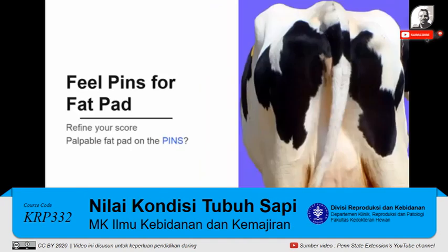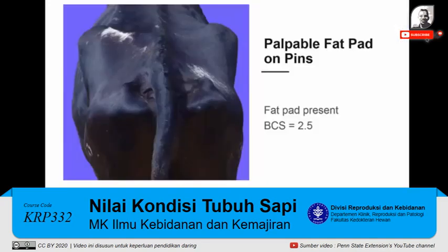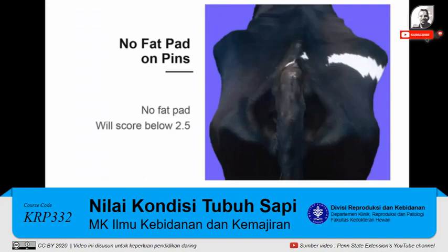Now let's refine that score of less than 2.75 by evaluating the pins more closely. Can you feel a fat pad on the point of the pins? If you can feel a fat pad on the point of the pins, the cow will score 2.5. If you cannot feel a fat pad, the cow will score less than 2.5.